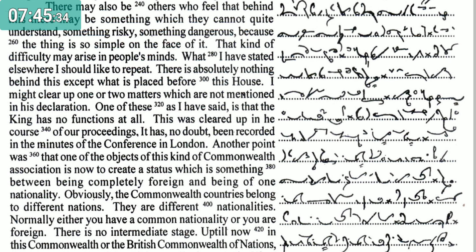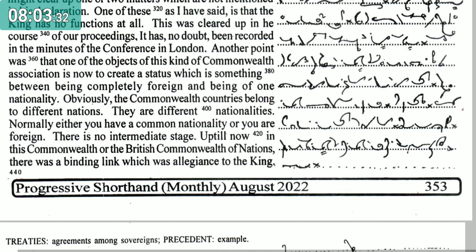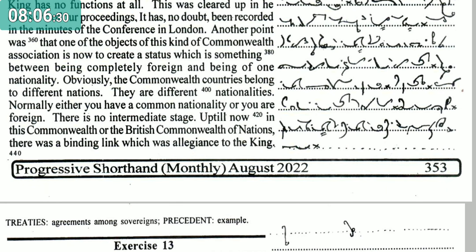Another point is that one of the objects of this kind of Commonwealth association is to create a status which is something between being completely foreign and being of one nationality. Obviously, the Commonwealth countries belong to different nations. Normally either you have a common nationality or you are foreign — there is no intermediate stage. Up till now in the Commonwealth, there was a binding link, which was allegiance to the King.